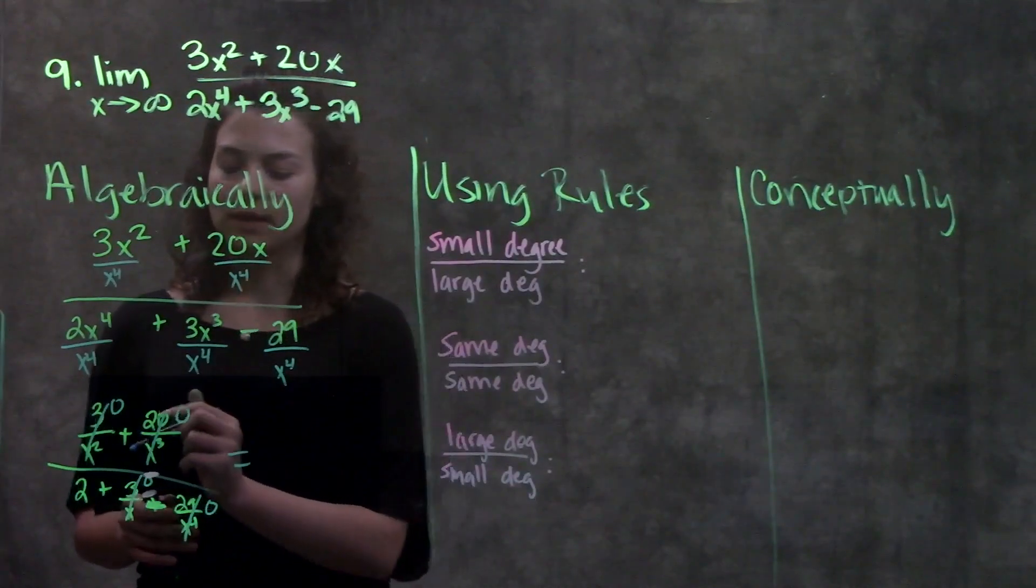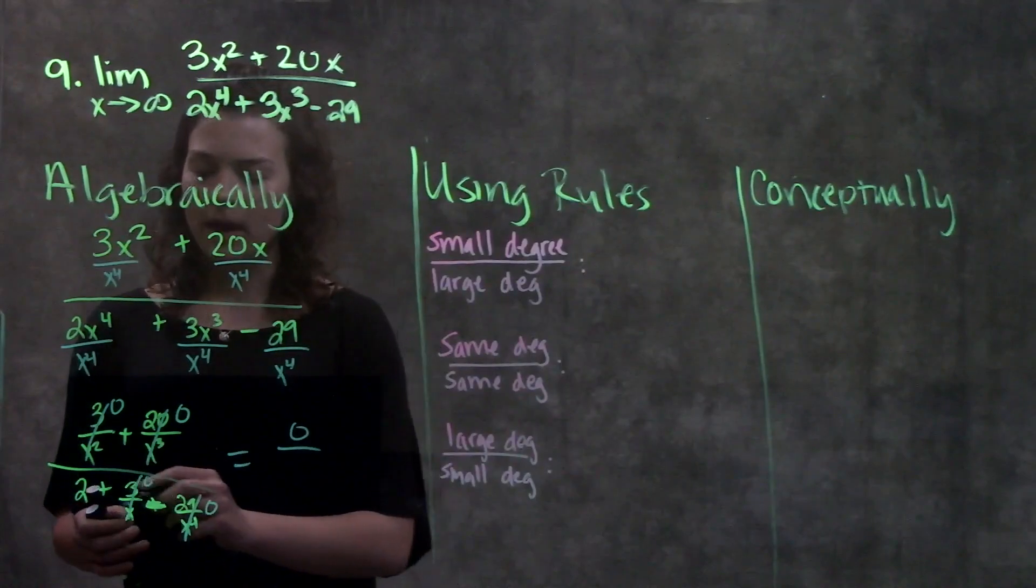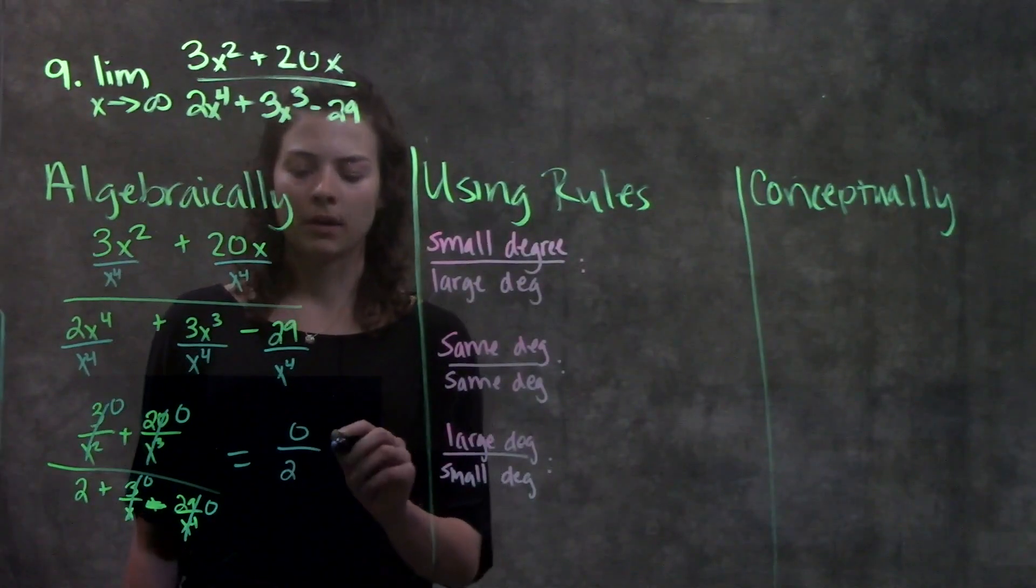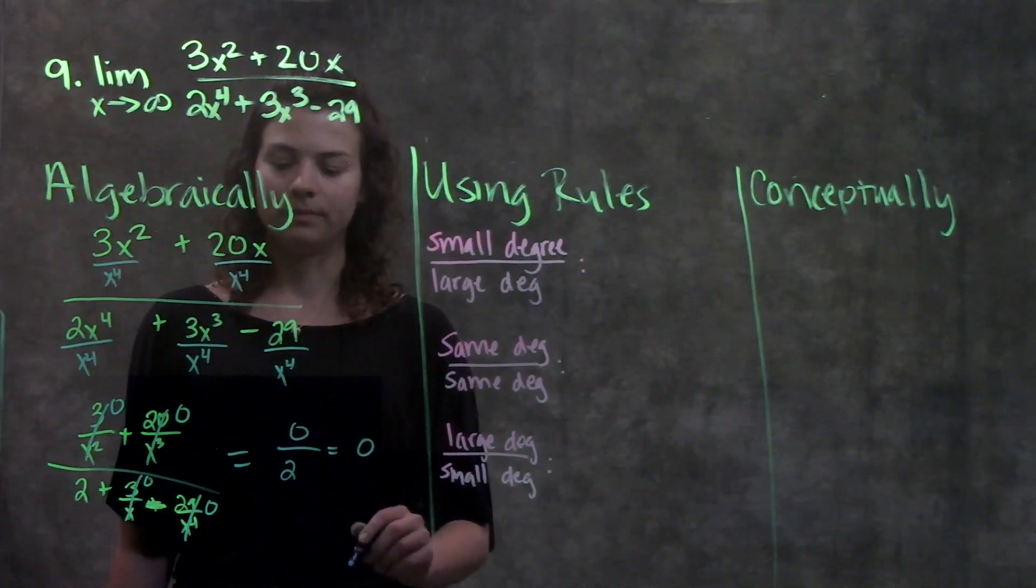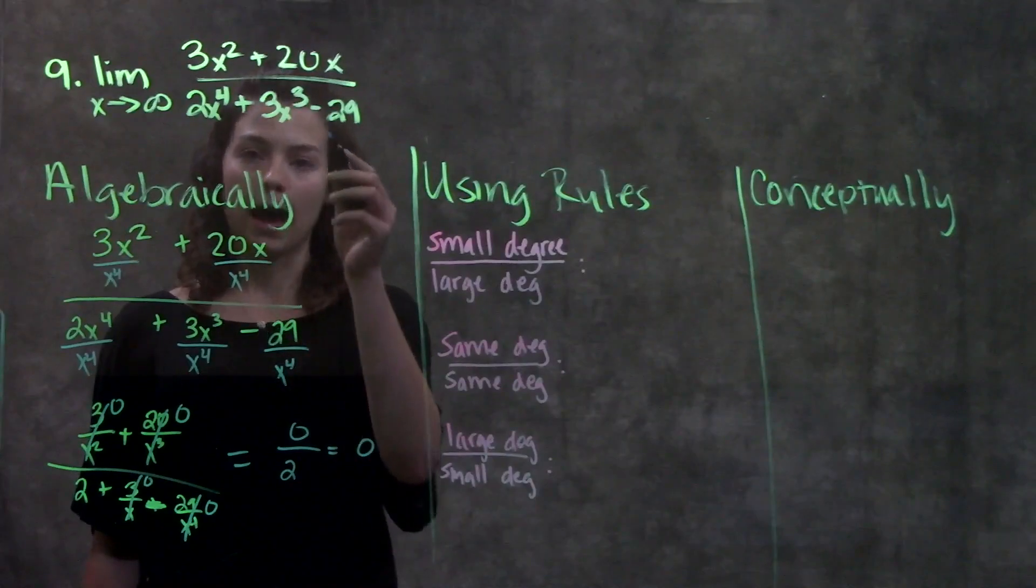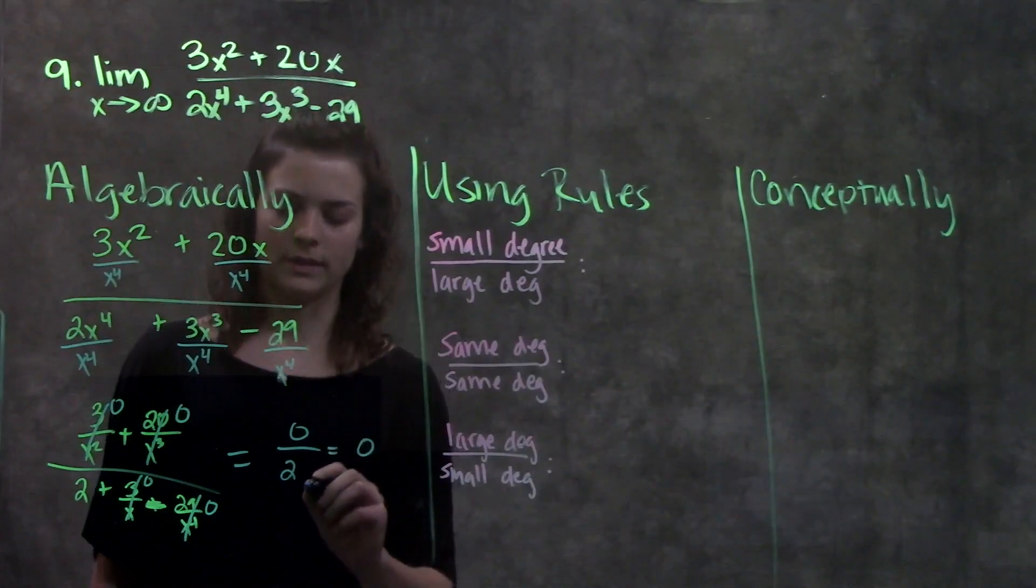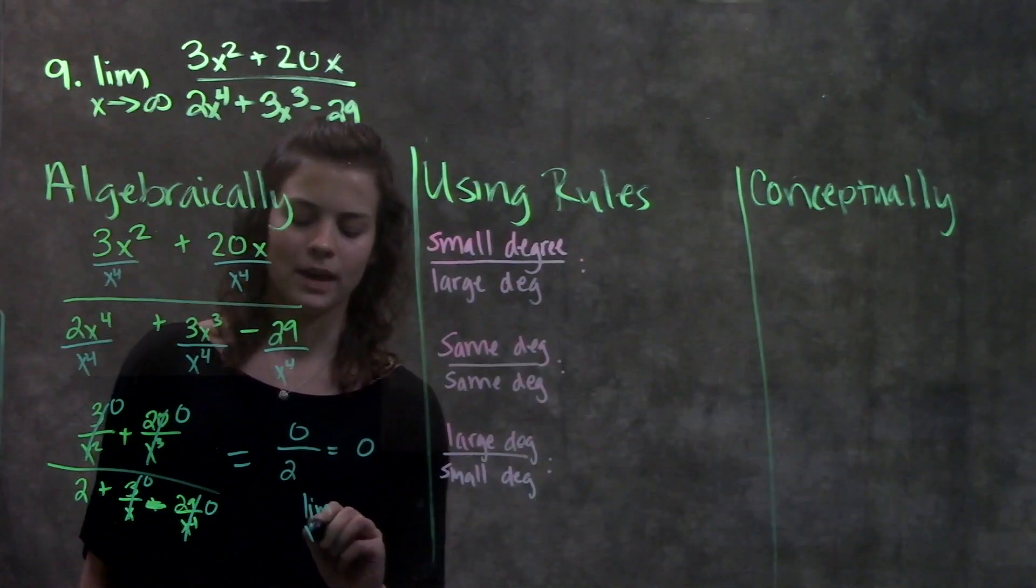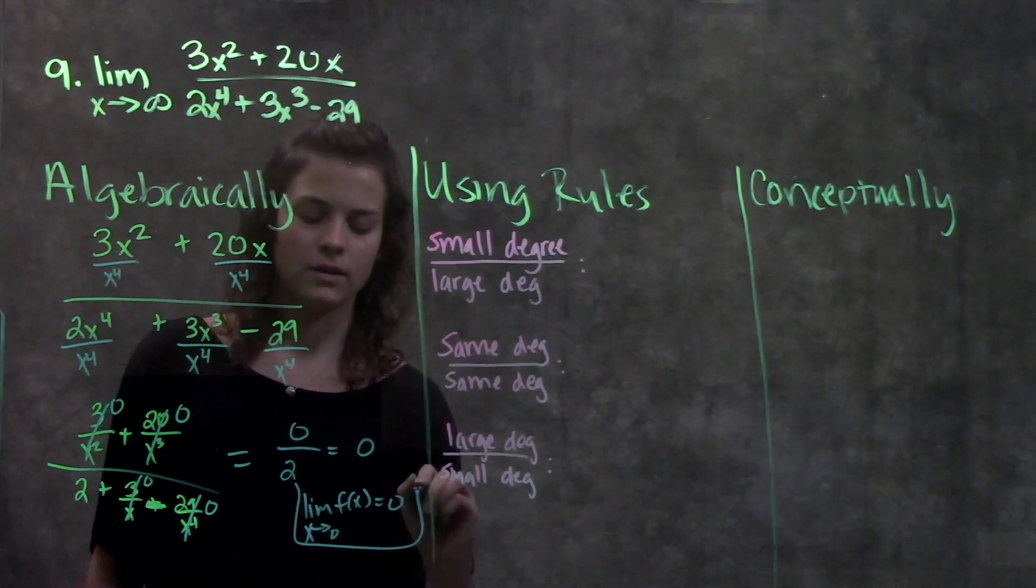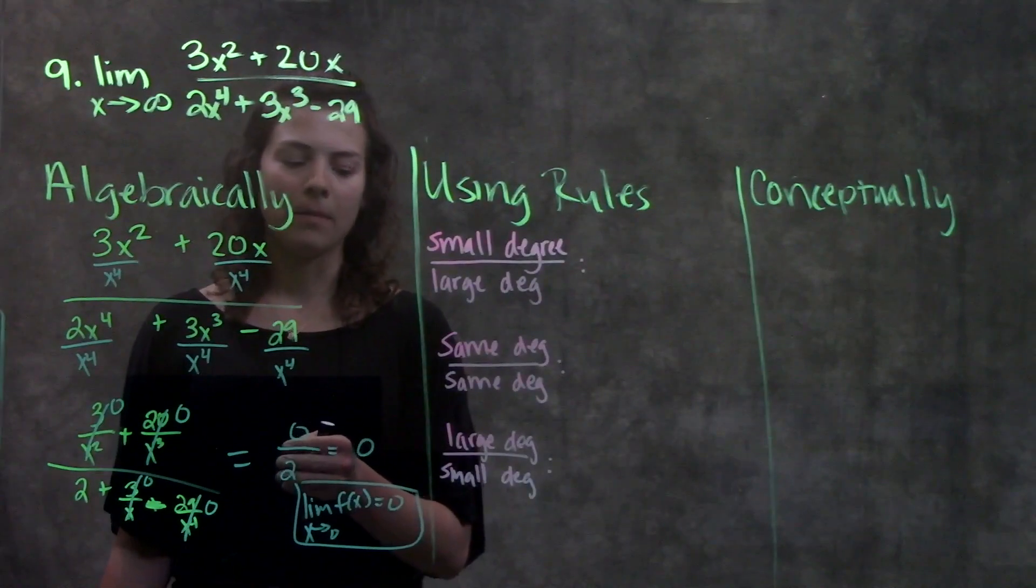Now I see what I'm left with. On the top, I have just zero. On the bottom, I have two plus zero, which is just two. Zero over any number just becomes zero. So my answer for this problem, the limit as x approaches infinity of that function, is equal to zero. This is the algebraic way of how I solve that problem.